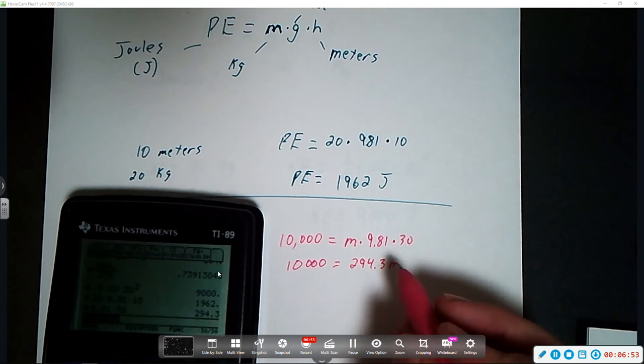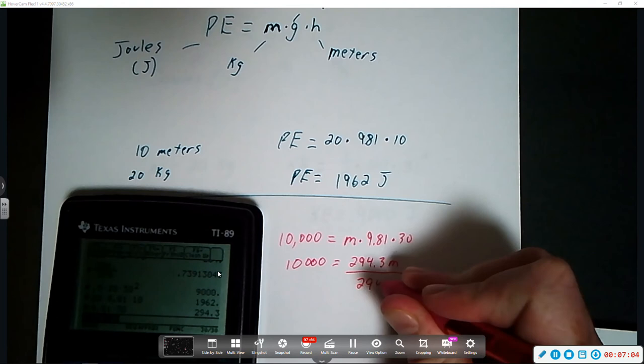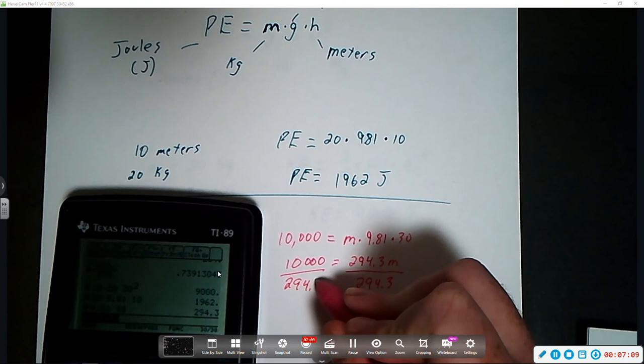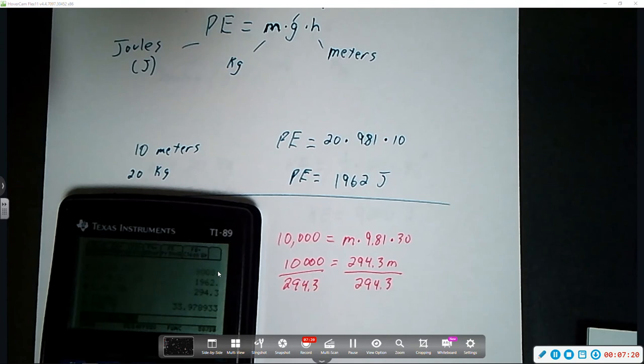Now, using our rules for solving equations, we are going to try to get m by itself, and right now, it's being multiplied by 294.3. So, in order to undo that, we need to divide by 294.3. So, 10,000 divided by 294.3, we are going to get 33.978933.